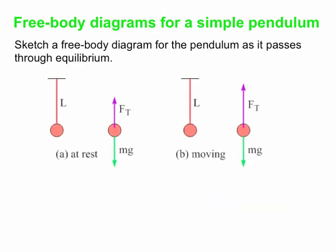Omega is the square root of k over m for a block and spring — but what is it for a pendulum? A pendulum — just a ball and a string — is another good example of a simple harmonic motion system, and we'll go through the derivation of what omega is.